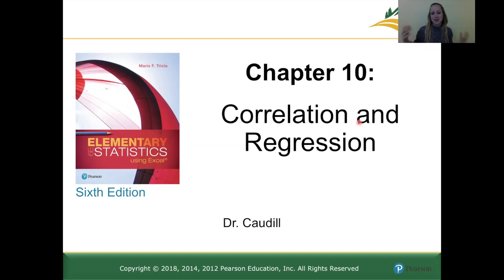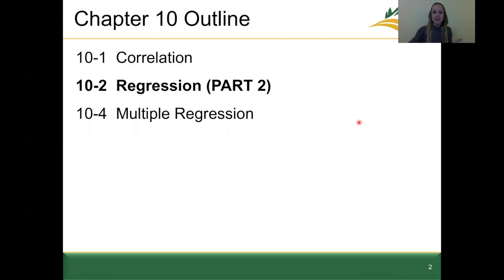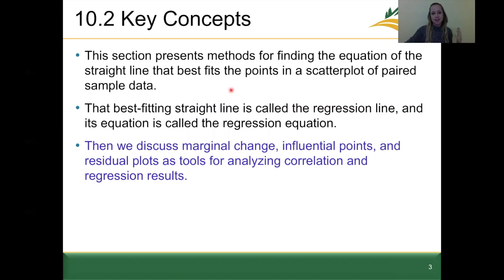Hi everyone. Welcome back to chapter 10. We're going to finish up chapter 10.2 today on regression — this is part two. The key concepts we'll cover from 10.2 in part two include discussing marginal changes, influential points, and residual plots as tools for analyzing correlation and regression results. We have a little bit more to finish up for 10.2, then the last section of the semester is 10.4.